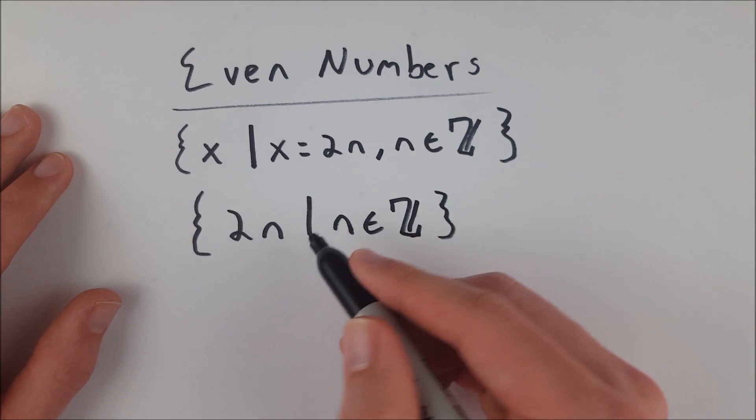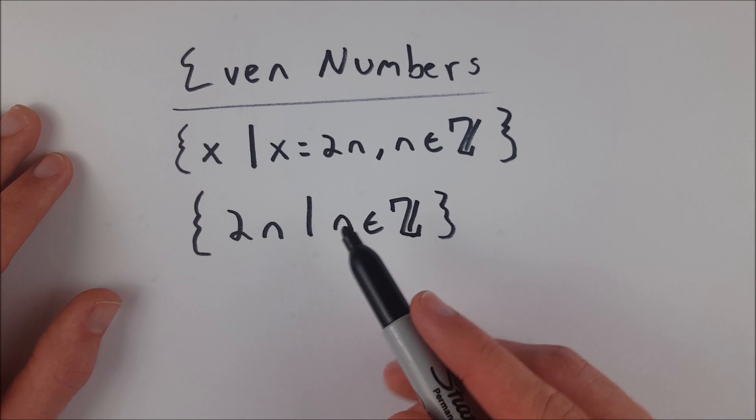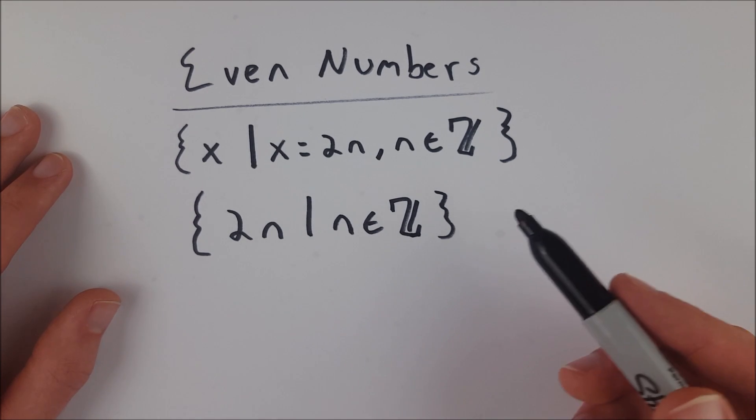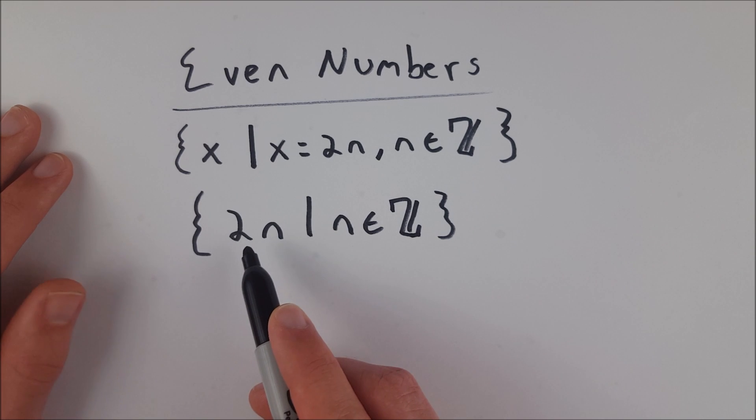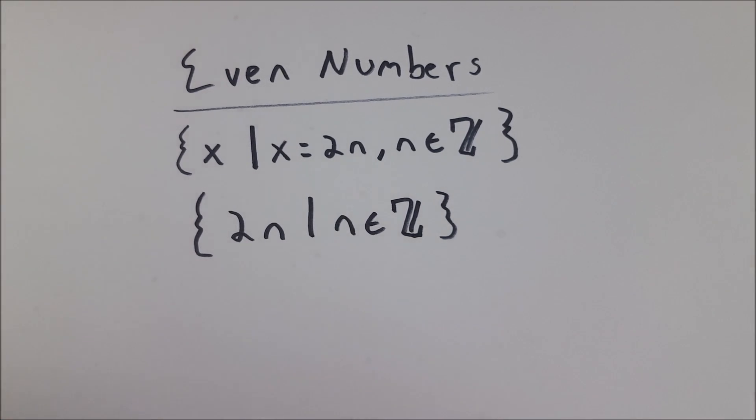And here, you might not read this as such that, it'd be a little more appropriate to read it as 2n, where n is an element of the integers. So then, you can see that this is just every integer multiple of 2. Therefore, it is the even numbers.